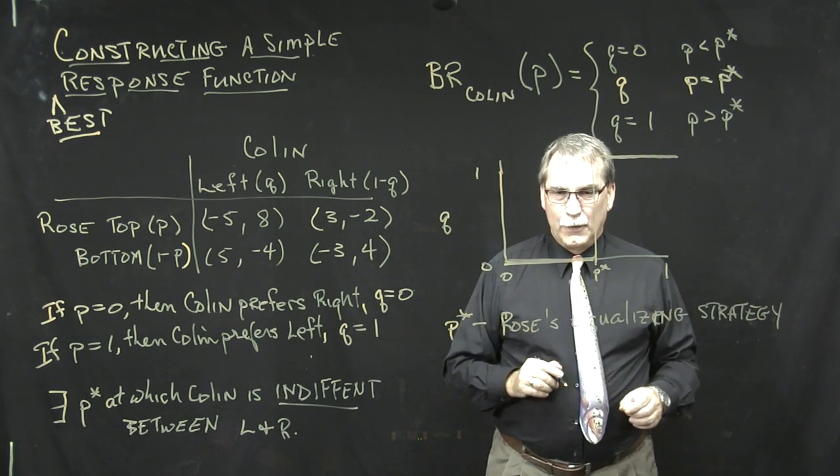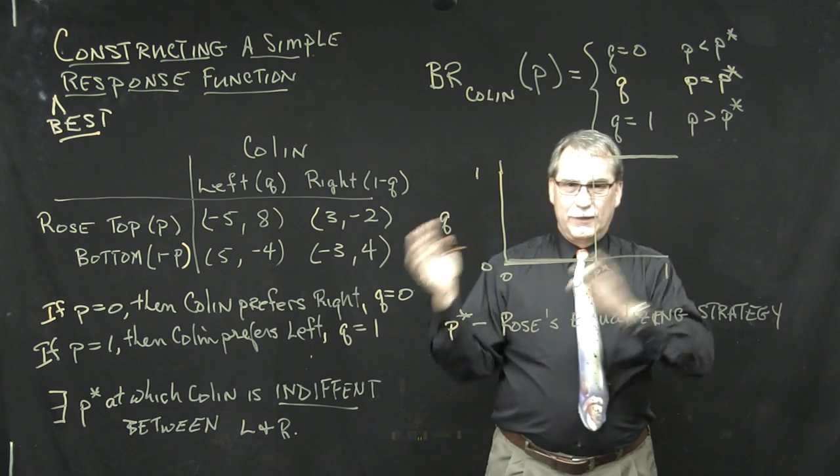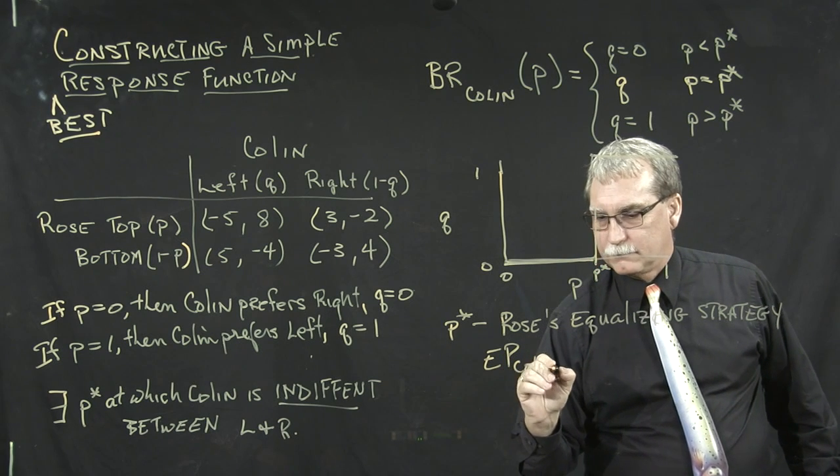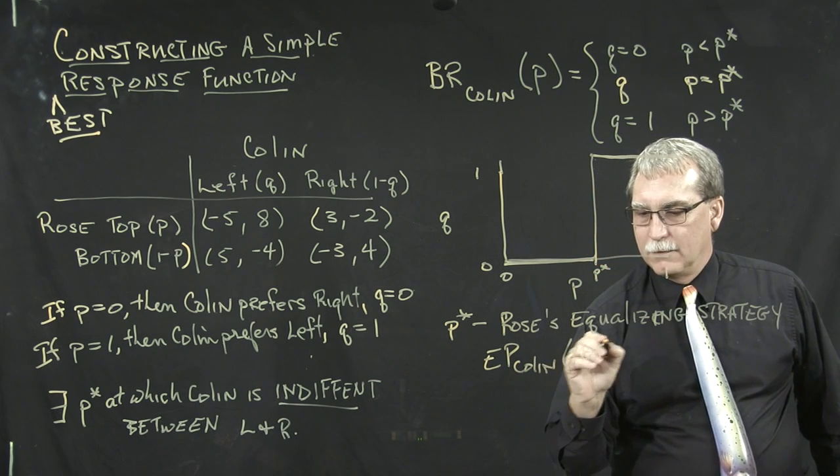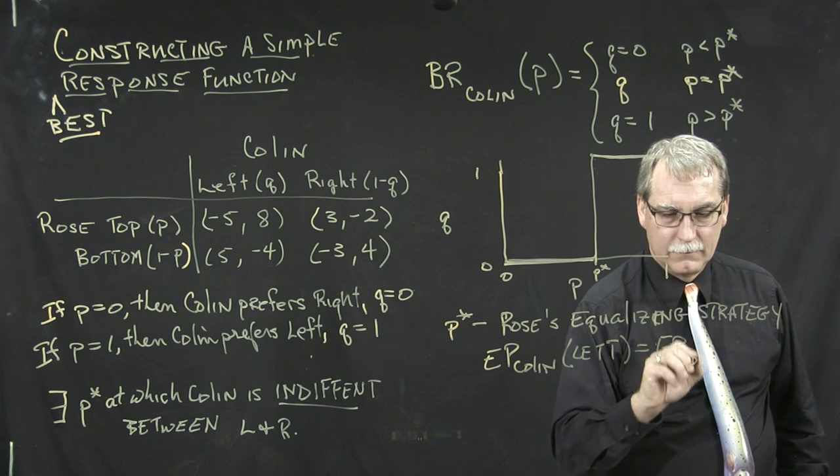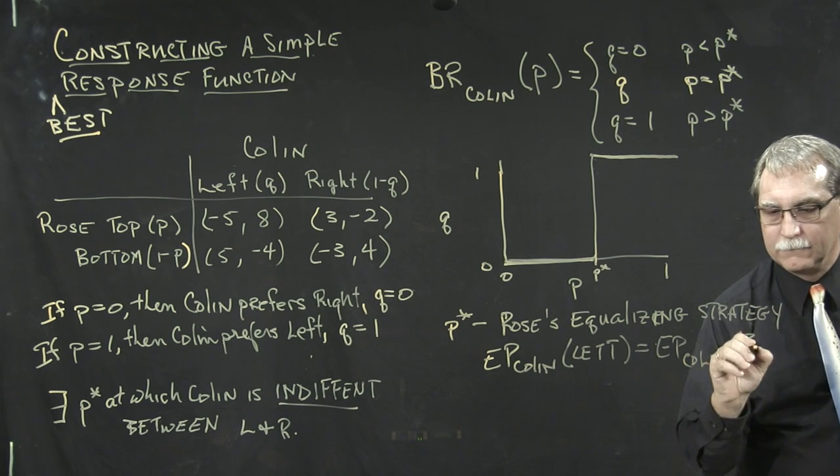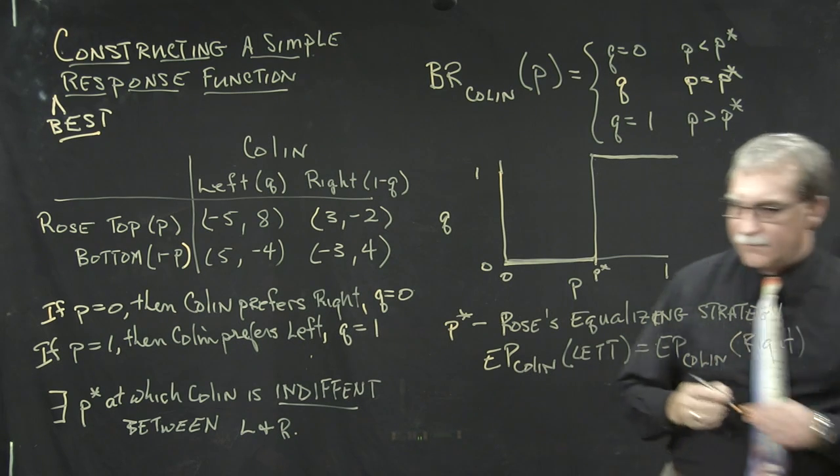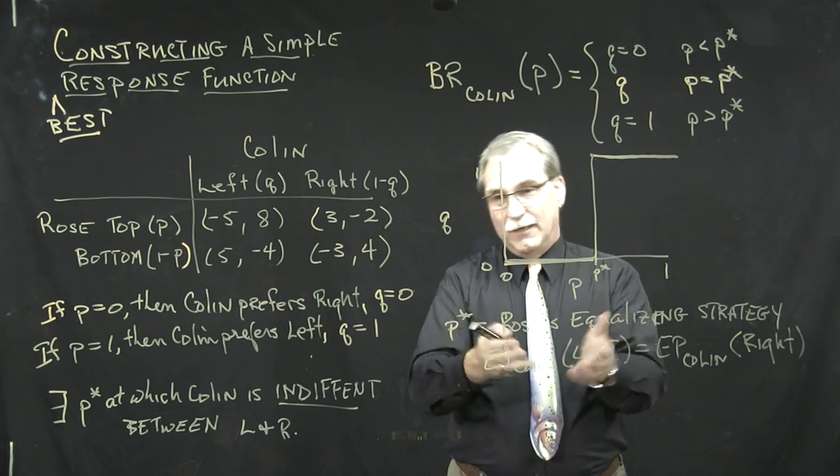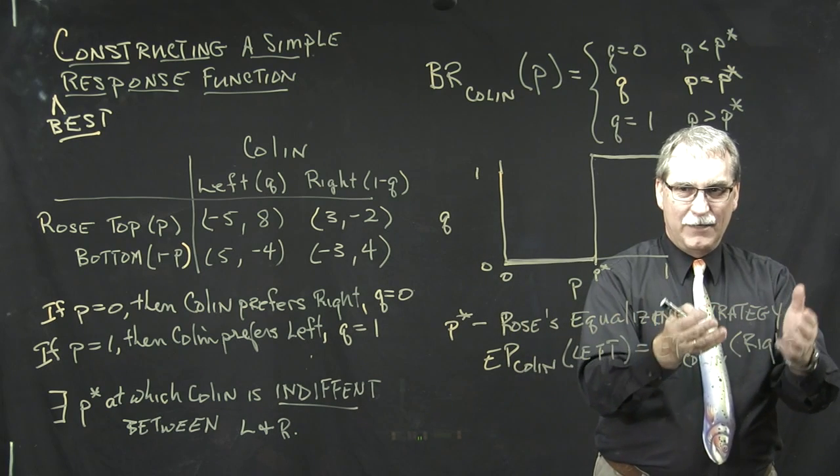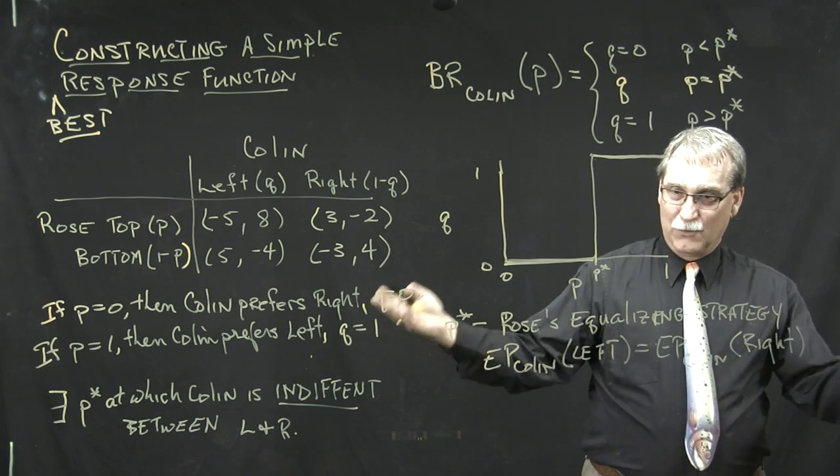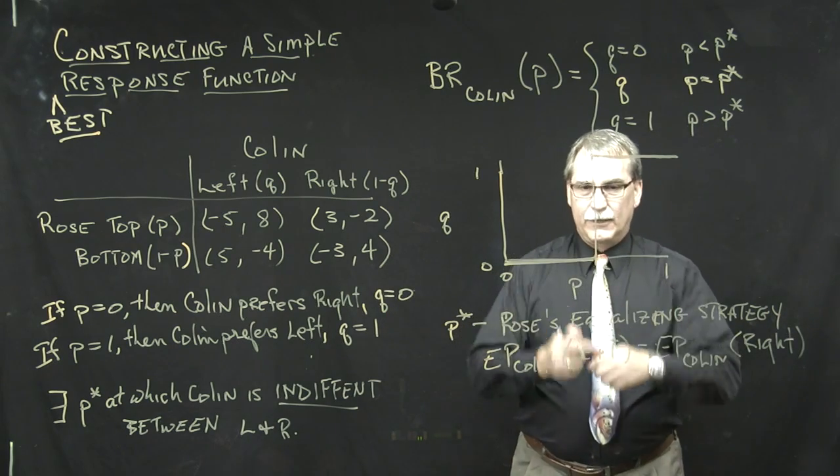So how do we find P star? Well, if Colin is indifferent between left and right, that means that his expected payoff for Colin on the left has to be equal to his expected payoff on the right. Because if his expected payoff on the left is bigger, then he prefers the left. If his expected payoff on the right is bigger, he prefers the right. So the only way he could be indifferent is if these two things are equal.